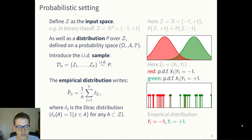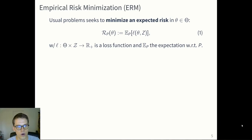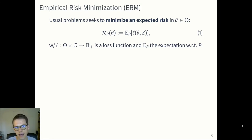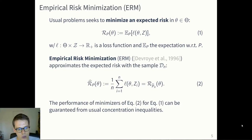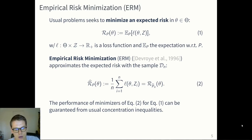In a learning problem, you try to find the ground truth — where to separate the instances — using this empirical distribution instead of the full distribution. The usual setting of statistical learning is empirical risk minimization: minimize the empirical risk and see how it relates to the real risk. The real risk is defined as the expectation of the loss function with parameter theta. In the empirical distribution, you approximate this with the sample D_n and derive the estimator R-hat of P of theta. You can guarantee the performance of the minimizer with usual concentration inequalities with respect to the real risk R_P of theta.